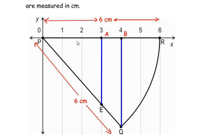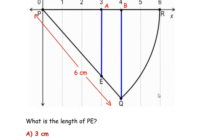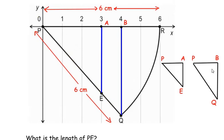If we look at this, PBQ and PAE form right-angled triangles. Let us see if these two triangles are similar to each other. I'm going to break up these two triangles and draw here again for easy reference. This is triangle PAE and this is triangle PBQ, the bigger triangle.